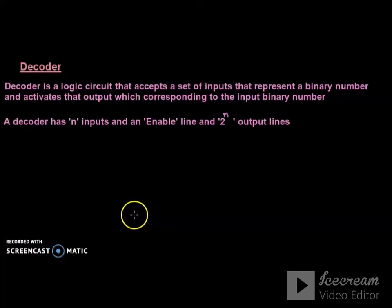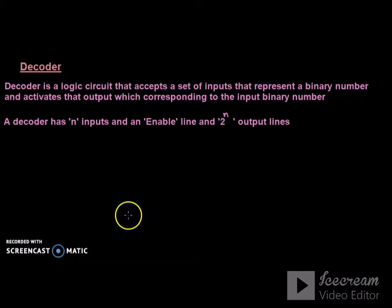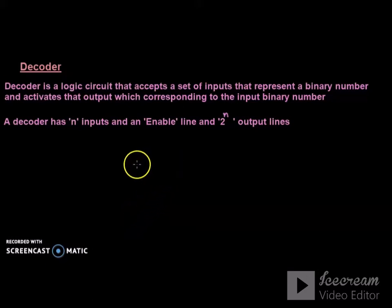Let's have a look at the topic: decoder. A decoder is a logic circuit that accepts a set of inputs representing a binary number and activates the output corresponding to that input binary number. A decoder has n inputs, one enable line, and 2-raised-to-n output lines.